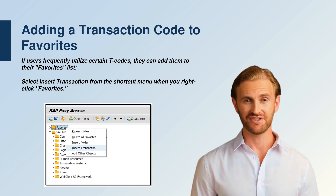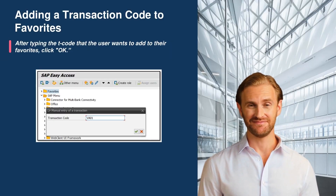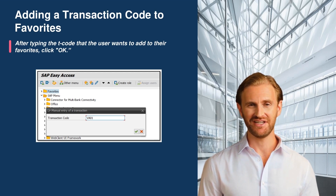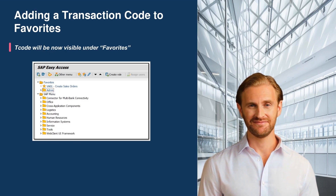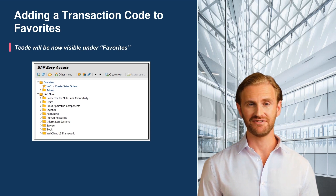Select Insert Transaction from the shortcut menu when you right-click Favorites. After typing the T code that the user wants to add to their favorites, click OK. The T code will now be visible under Favorites.